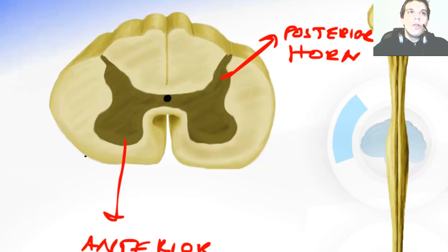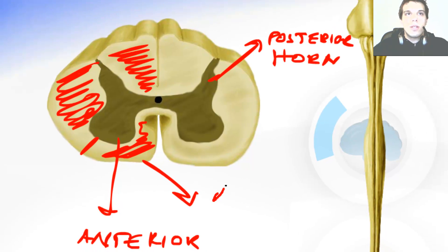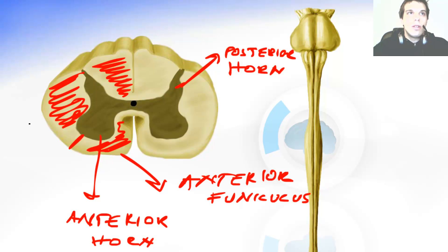Now in the white matter we can distinguish the lateral funiculus, posterior funiculus and the anterior funiculus. This is the anterior funiculus, this is the lateral funiculus and this over here is the posterior funiculus.